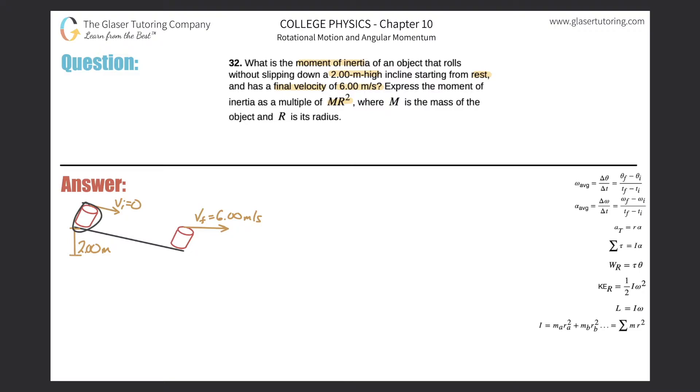It could be a sphere, cylinder, or whatever. I chose to show a cylinder but it really doesn't matter. The initial velocity of the object is zero. At the end of the slope the velocity will be six and the beginning height is two meters. This problem kind of piggybacks off of the last question.